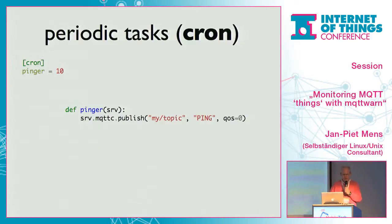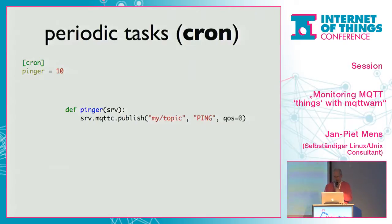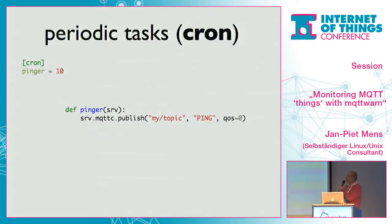One feature somebody wanted is periodic tasks. These are configured within the configuration file in the cron section. You can have individual function names and specify a number of seconds. Then this Python function, which you write yourself, will be invoked every so many seconds. In this particular case we're using the built-in service object to publish a particular ping on a specific topic every 10 seconds.